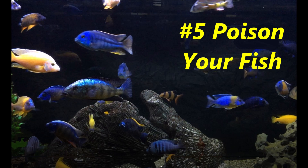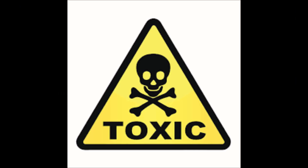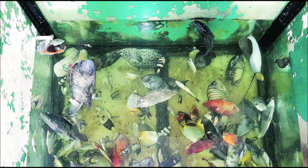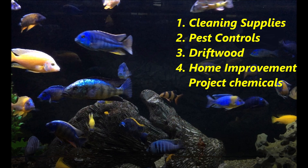The fifth root cause of an aquarium disaster is the poisoning of your fish. There are quite a few toxins that our aquarium inhabitants can be exposed to, and we certainly never want all our fish to die of poisoning. Examples include cleaning supplies or pest controls getting into the aquarium water, driftwood that wasn't prepared properly, and home improvement projects and the chemicals we use around the house.